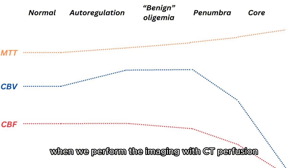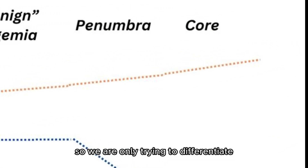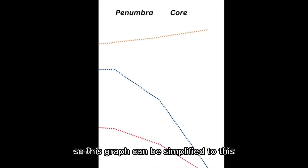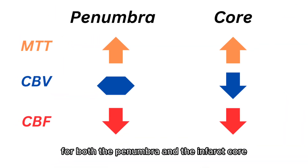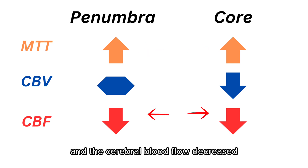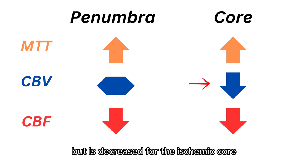When we perform CT perfusion imaging, the patient will already have clinical symptoms, so we are only trying to differentiate between the penumbra and ischemic core, and the graph can be simplified accordingly. For both the penumbra and the infarct core, mean transit time is increased and cerebral blood flow is decreased; however, cerebral blood volume is often near normal for the penumbra but is decreased for the ischemic core.